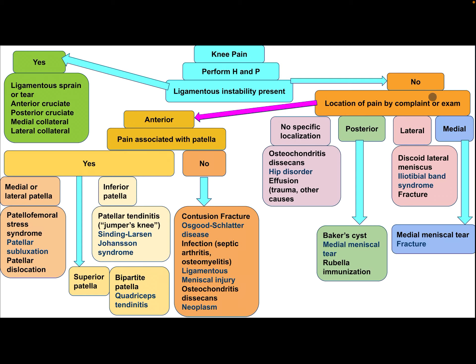If there is no ligamentous instability, determine the site of pain by physical examination or history. If it is anterior and associated with pain at the patella — either medial or lateral — the differential includes patellofemoral stress syndrome, patella subluxation, and patellar dislocation. If superior patella: bipartite patella or quadriceps tendinitis. If inferior patella: patellar tendinitis, jumper's knee, or Sinding Larsen-Johansson syndrome.